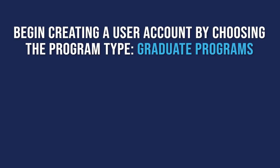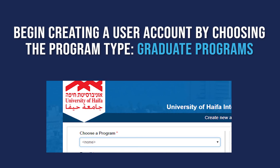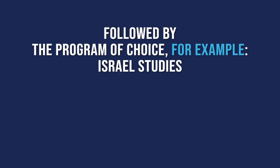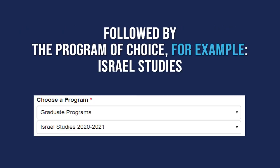Under Program Type, select Graduate Programs. In the next field, you will choose your program of choice. For this example, we will select the Israel Studies Program.